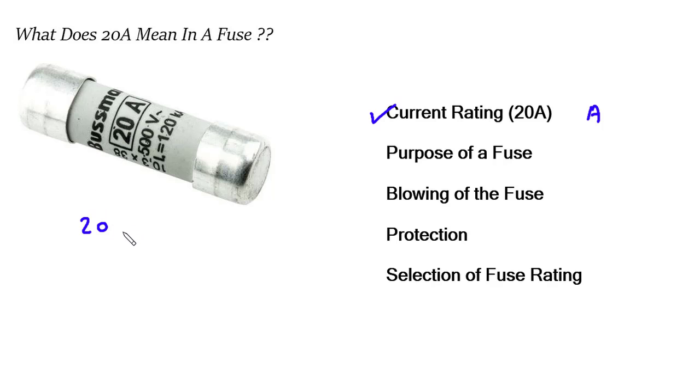Purpose of a fuse. A fuse is a protective device used in electrical circuits. Its primary purpose is to protect the circuit from overcurrent situations. An overcurrent can occur due to faults in the circuit such as short circuits or overloads. Without protection, excessive current can lead to overheating and damage to the circuit components or even fire hazards.